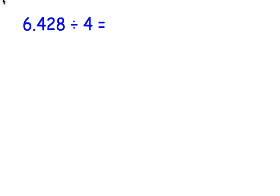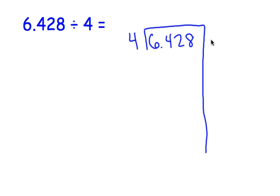One more problem. Let's set it up. 6.428 divided by 4. Okay, this is a large number. Let's pretend again that this number is 6,428 divided by 4. We're going to ignore the decimal for now.